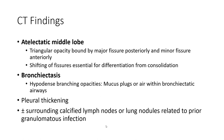Atelectatic middle lobe: triangular soft tissue bounded by major fissure posteriorly and minor fissure anteriorly, with fissure shifting. Differentiating atelectasis from consolidation: monoatelectasis, hyperdense branching lucency, and mucus plugging. Plus thickening classified by lymph node enlargement related to pre-granulomatous infection.